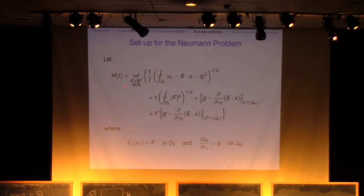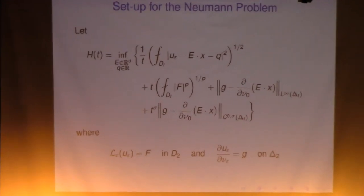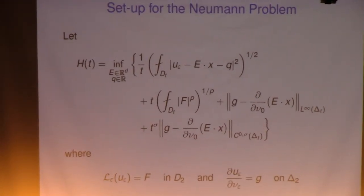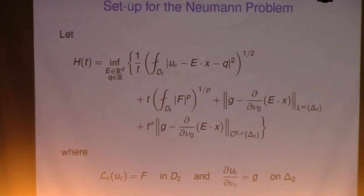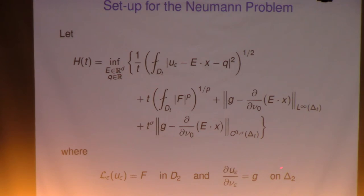So for the Neumann problem, again, the setup is the same for the first term. You look at the difference of your solution and the linear function and take the infimum among all linear functions, the L2 average. Second term is the same. The last two terms are a little tricky here. So here, G is the Neumann data, the Neumann data of U-infinity norm. So somehow, you will need to subtract the co-normal derivative of the linear function with respect to the homogenized operator. So here is not nu y, but nu 0. Nu 0 is the co-normal derivative for L0. So otherwise, it's the same. You have the rise. This is an L-infinity norm, and this is a C-sigma norm here. That is the setup.